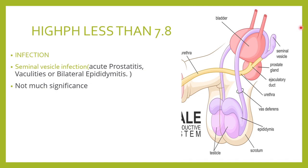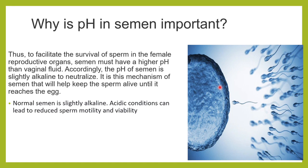A high pH of more than 7.8 is usually not of much clinical relevance. However, in certain infections such as seminal vesicle infection, acute prostatitis, or epididymitis, the alkalinity of the semen can become more than 7.8 or 8. The normal range of seminal pH is between 7.2 to 7.8.